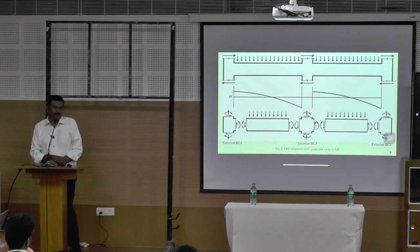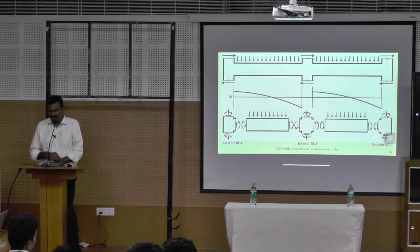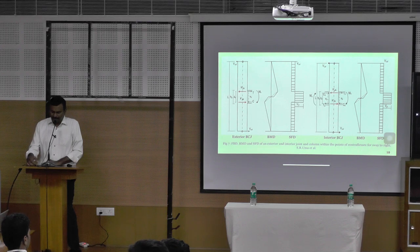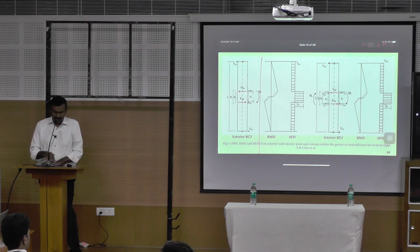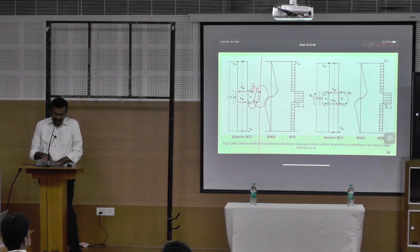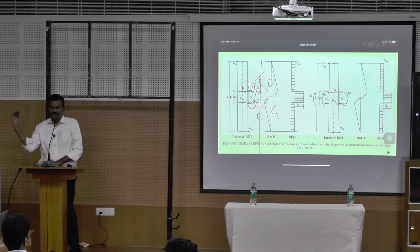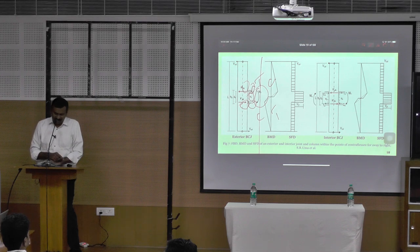Now I come to the anatomy of the beam-column joint — exterior beam-column joint, deviate beam-column joint. We have a huge force combination here. For example, in an exterior beam-column joint: moment is there, tension is there, compression is there. In the forward cycle, tension here, compression there; in the reverse cycle, compression here, tension there. Then horizontal shear and vertical shear — a lot of things are involved here.